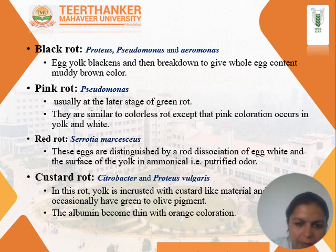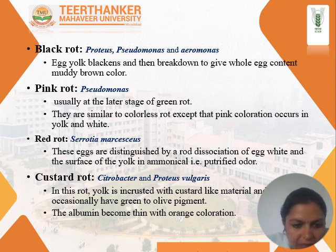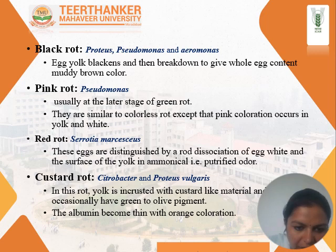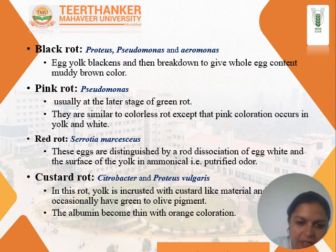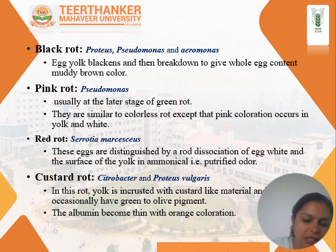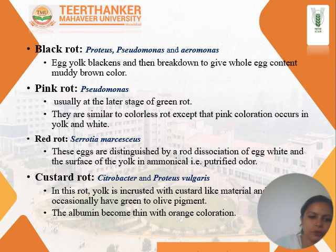Pink rot is similar to colorless rot except that pink coloration occurs in the egg yolk and white in the presence of UV light. Red rot is due to Serratia marcescens species. These eggs are distinguished by disintegration of egg white, and the surface of the yolk is ammoniacal and putrefied, presenting a putrefied odor. Custard rot is caused by Citrobacter and Proteus vulgaris species. In this rot, the yolk is encrusted with custard-like material and occasionally has green or olive color pigment, while the albumin becomes thin with an orange coloration.